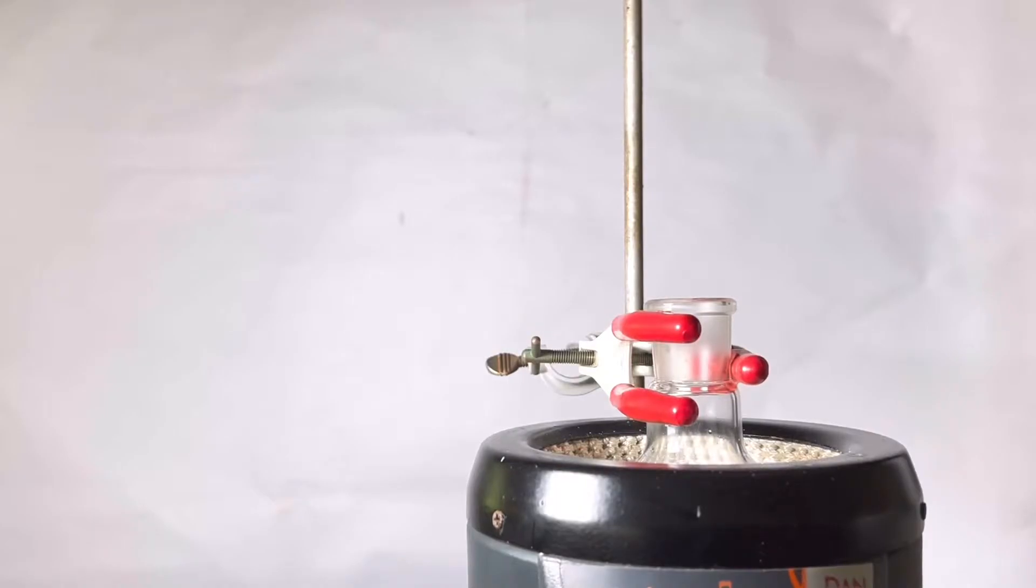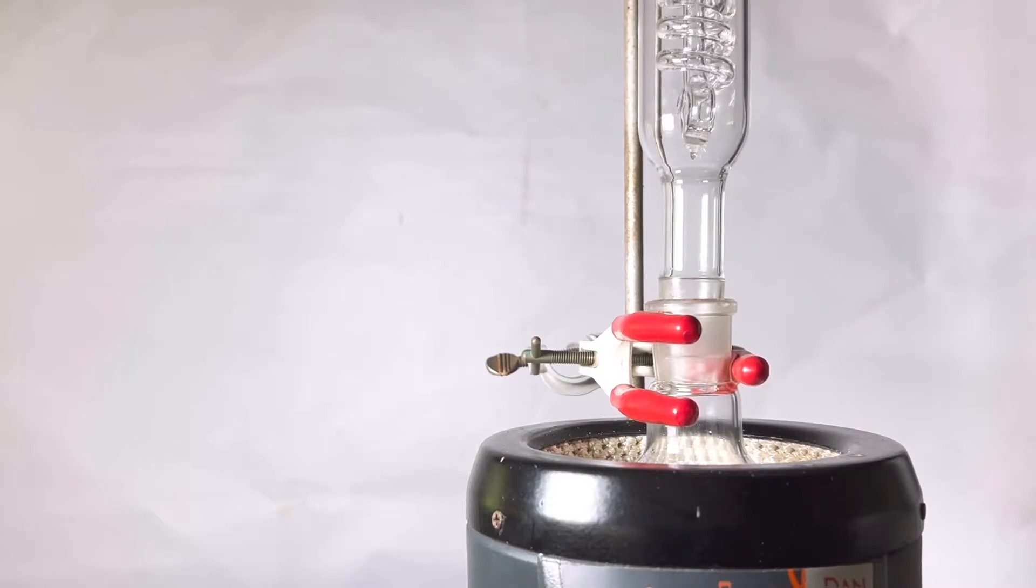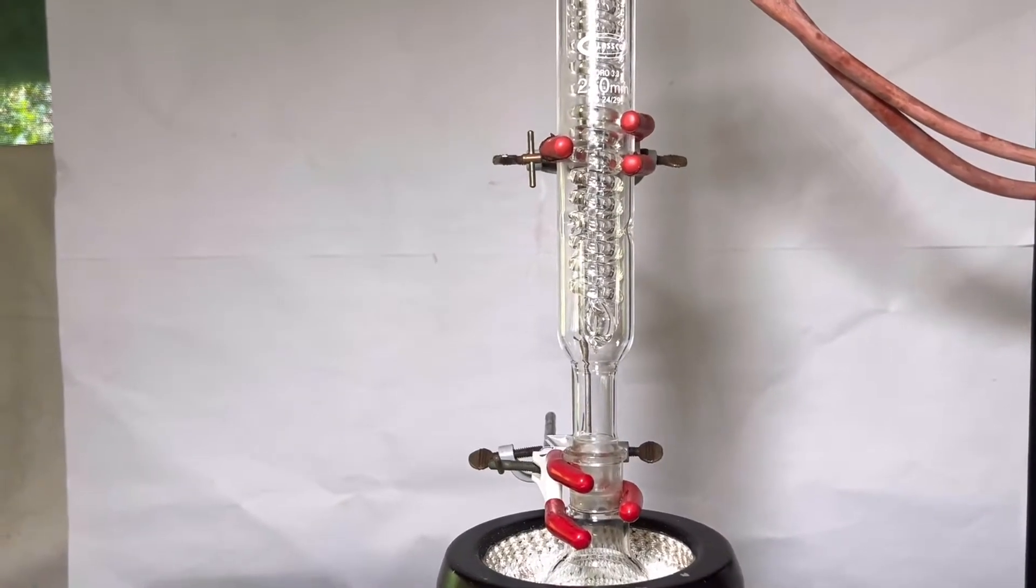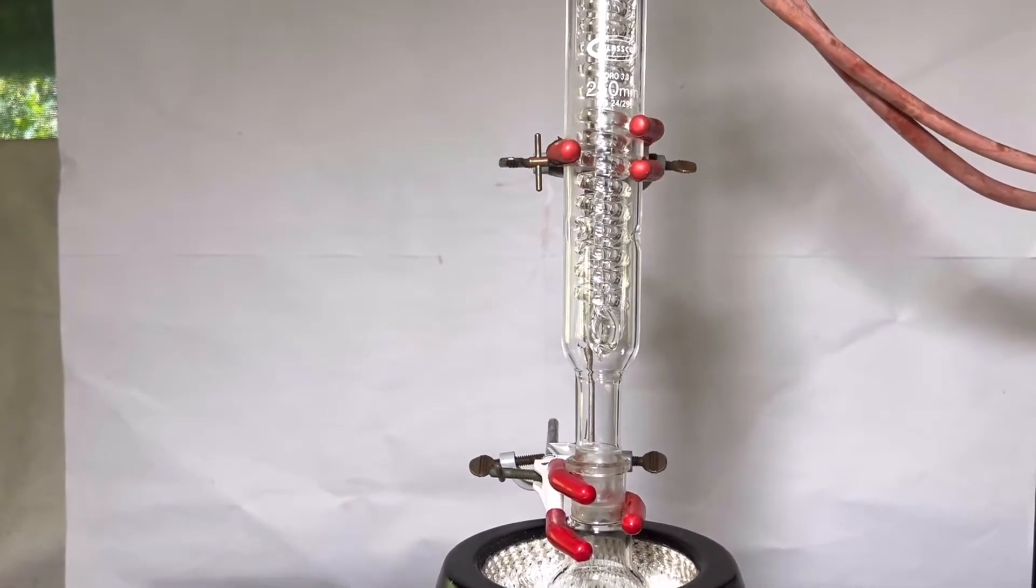The flask was placed in a heating mantle equipped with a dimroth condenser. Then the reaction mixture was refluxed for 1 hour 30 minutes. By this time the butyl cyanide which remained as a separate layer would disappear.